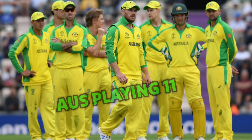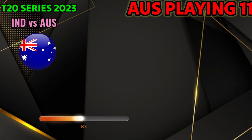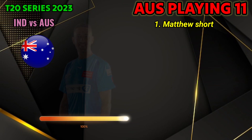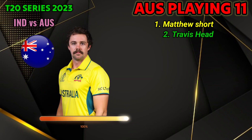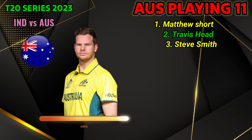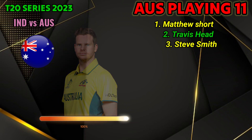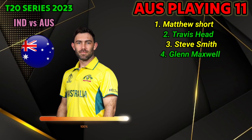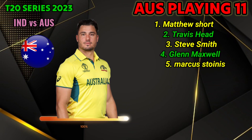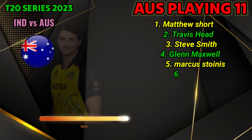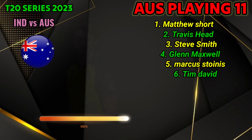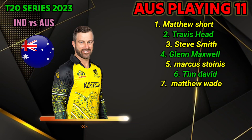Australia team playing 11: 1. Matthew Short, 2. Travis Head, 3. Steve Smith, 4. Glenn Maxwell, 5. Marcus Stoinis, 6. Tim David (right-handed batsman), 7. Matthew Wade.